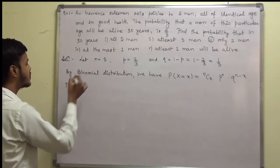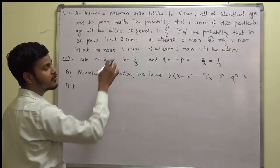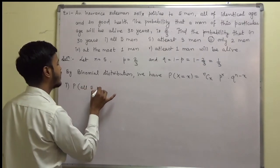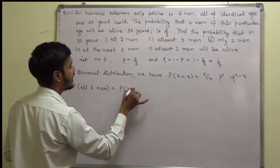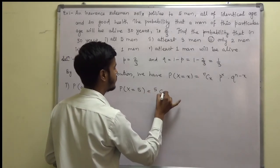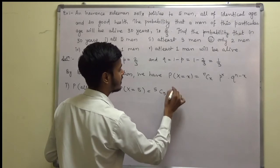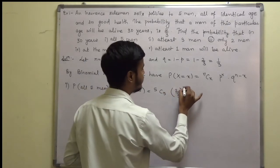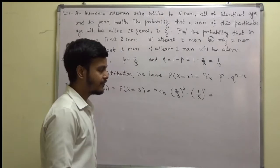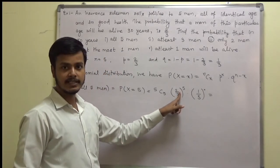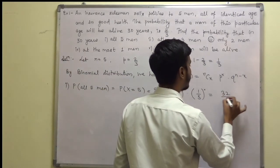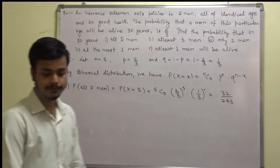First: probability of all 5 men being alive. That is probability of X equals 5. Applying the formula: 5C5 times (2/3) to the power 5 times (1/3) to the power 0. 5C5 is 1, 2 to the power 5 is 32, and 3 to the power 5 is 243. So the answer is 32/243.